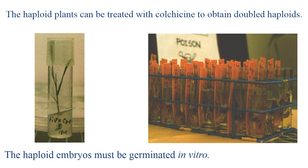The haploid plants can be treated with colchicine to obtain doubled haploids. The bulbosum technique is mainly used to induce haploidy, and the haploid embryo must be germinated in vitro in order to generate diploids or double haploids. That means the bulbosum technique involves both in vitro as well as in vivo methods.